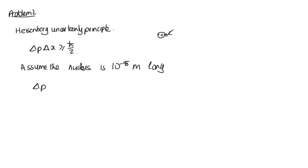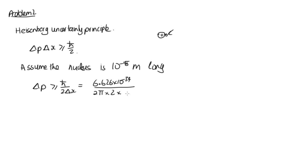We get that Δp ≥ ħ/(2Δx), which equals 6.626×10⁻³⁴ divided by 2π, then divided by this factor of 2, with Δx equal to the nucleus size — 10⁻¹⁵ m. Solving this on the calculator gives 5.27×10⁻²⁰ kg·m/s.